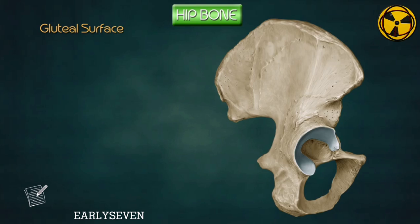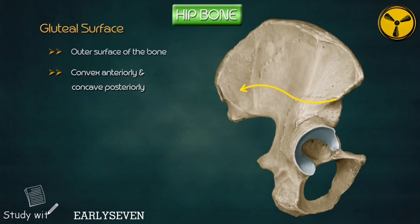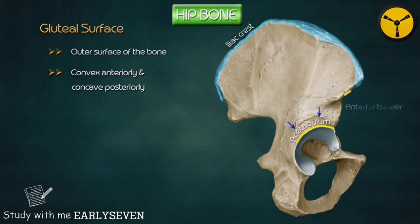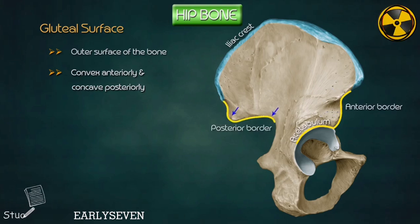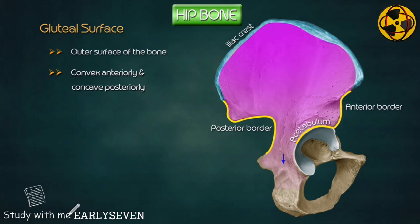Gluteal surface. It is the outer surface of the bone, convex anteriorly and concave posteriorly. This surface is bounded above by the iliac crest, below by the upper border of the acetabulum, in front by the anterior border, and behind by the posterior border. It becomes continuous with the posterior surface of the ischium behind the acetabulum.